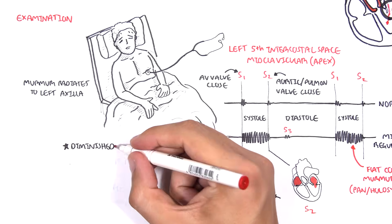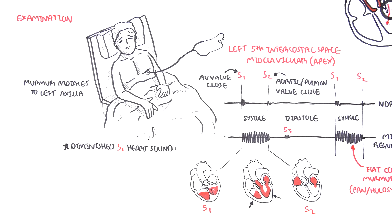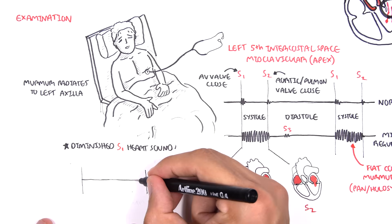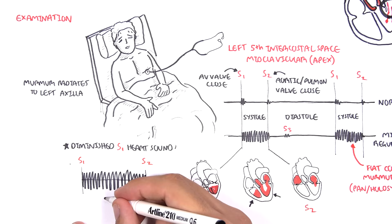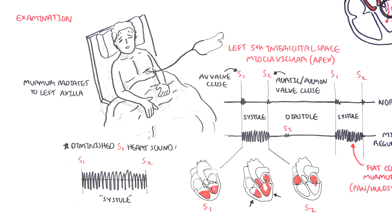Another finding is diminished S1 heart sounds, which represents the closing of the mitral valve. Recapping, the mitral regurgitation murmur begins at S1 and goes all the way till S2 when the aortic valve closes. The murmur is flat and continuous throughout systole.